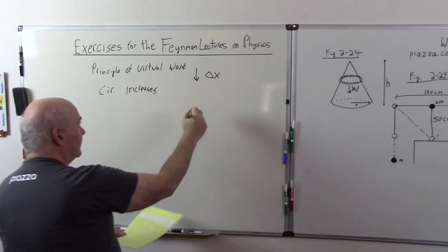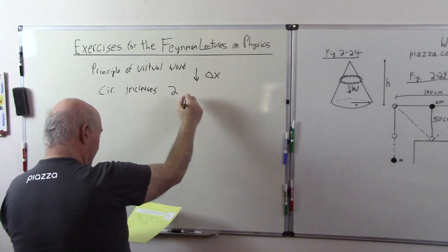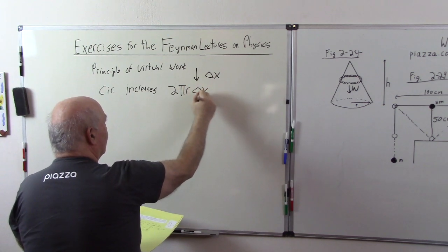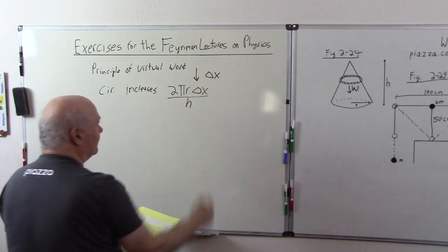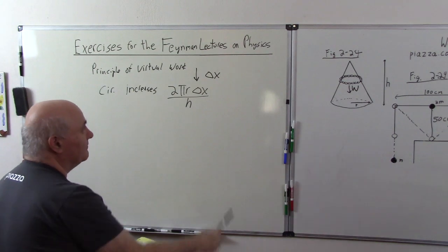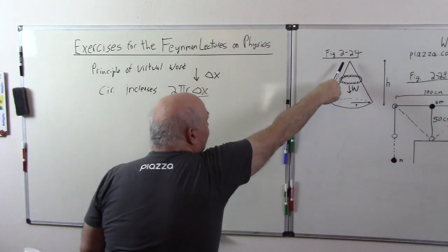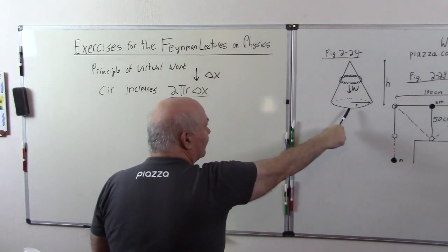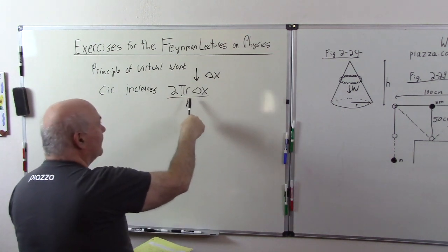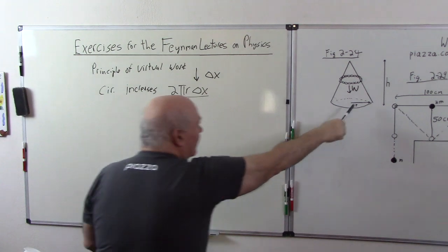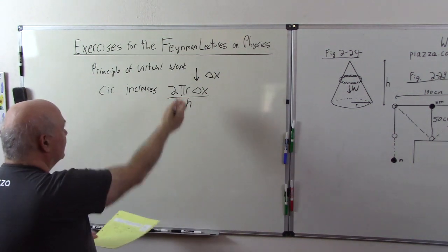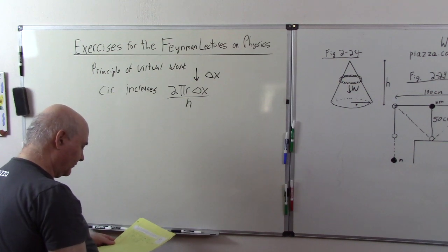This is pure geometry. A lot of these problems are like pure geometry. 2 pi r del x over H. You can verify that. Imagine we start at the top where del x would be zero so the circumference would be zero. We're on the bottom where del x would be H. Now the circumference would be 2 pi r as you would expect. And it's linear so this is the right answer. It's simple geometry.